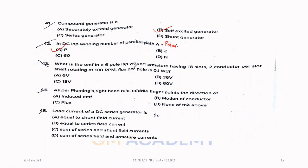Forty-three. What is the EMF in a six pole lap-wound armature having 18 slots, two conductor per slot, shaft rotating at 100 rpm, flux per pole is 0.1 Weber. Number of slots is 18. One slot is 2 conductor. So, total number of conductors is 18 into 2, that is 36. Poles is 6. Lap winding, so number of parallel path A equals P. So, the EMF E equals PZNA by 60A. Values are substituted, the answer is 6 volts. Option A is the correct answer.